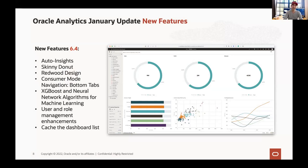In this new update, we have a skinny donut — a new way to display a pie chart, which is really cool. The Redwood template is now mandatory — you can see it's the dark bar at the top — and you have new icons. We also have a neural network machine learning algorithm that you can register. Be sure to use the latest version.